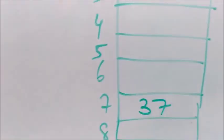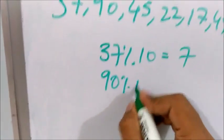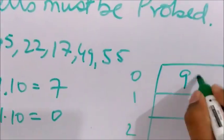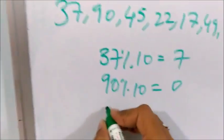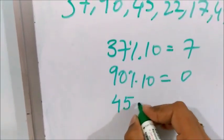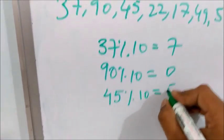Next element is 90. 90 mod 10, it will be at 0th location. Next element is 45. 45 mod 10, it will be at 5th position.